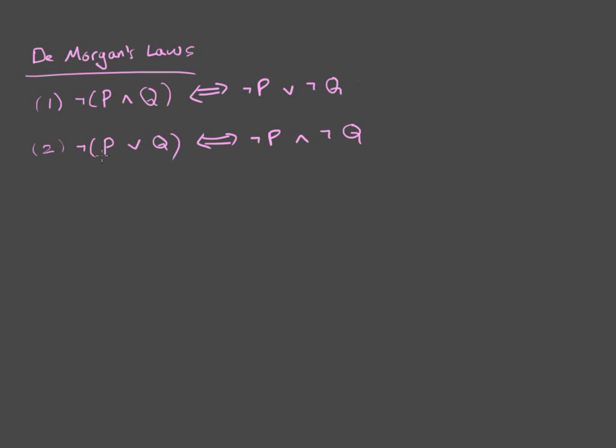Now, I'm going to prove number one and allow you to prove number two yourself, since the proofs are pretty much identical. And we're going to do this proof by a truth table. So, I'm going to consider the truth values for all of the following: P AND Q, NOT P AND Q, AND NOT P OR NOT Q.